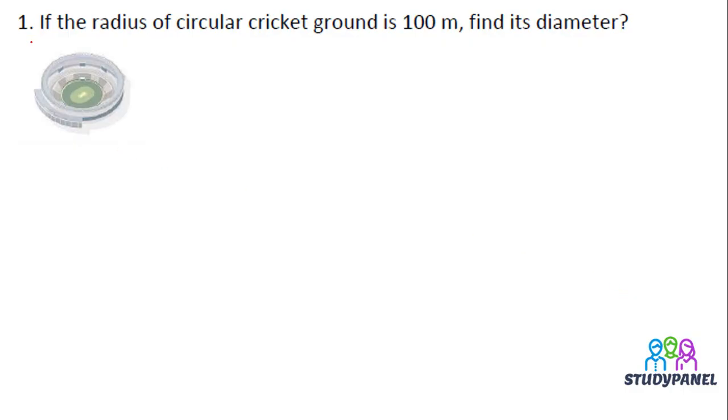Now we come to the first question. Very simple. Now, if the radius of circular cricket ground is 100 meters, if you can see here, then you can see the center here. If you look at the distance between this, then you will be able to find the radius.